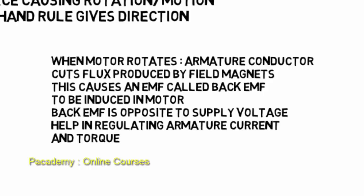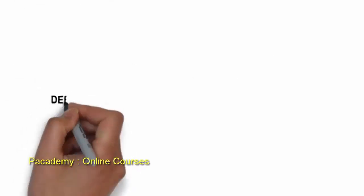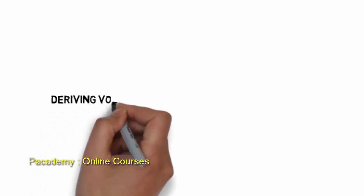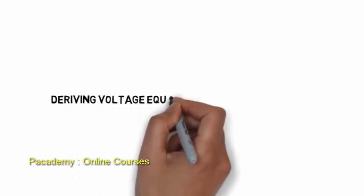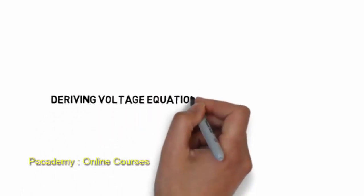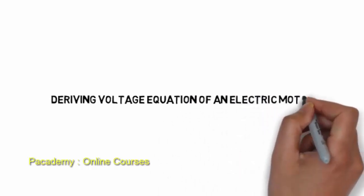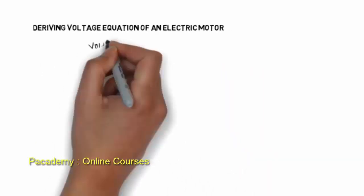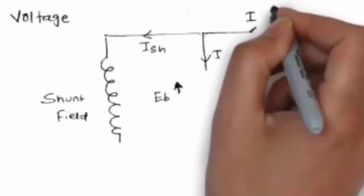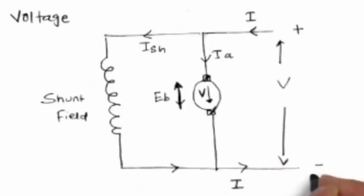According to the generator principle, an EMF will be induced in the conductor. This EMF is called back EMF, and the back EMF will always be opposite to the supply voltage. The armature current is given by supply voltage minus back EMF, divided by armature resistance. In this way, the back EMF helps to regulate the armature torque and current.